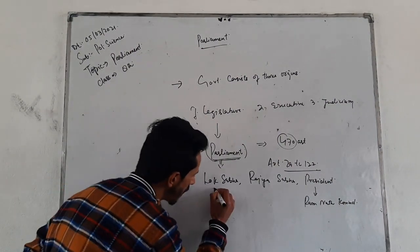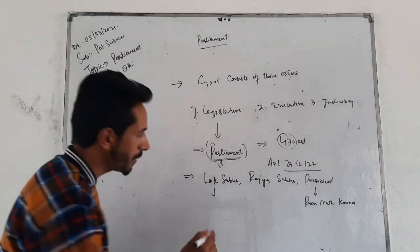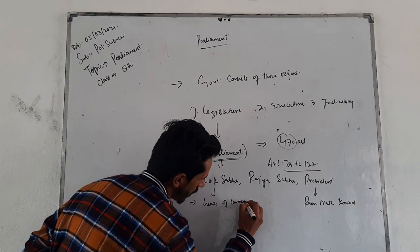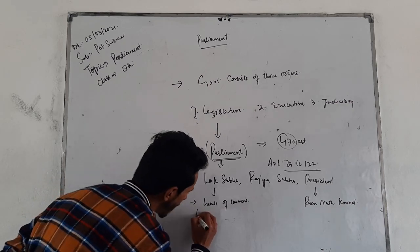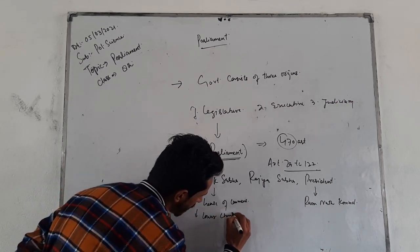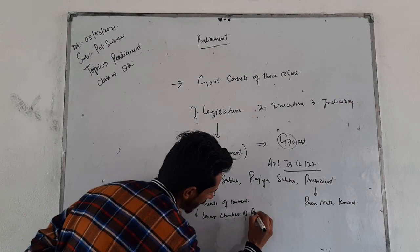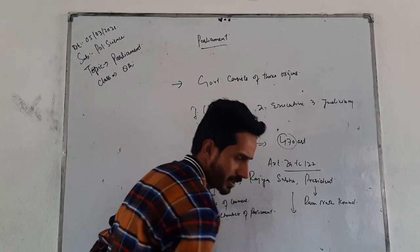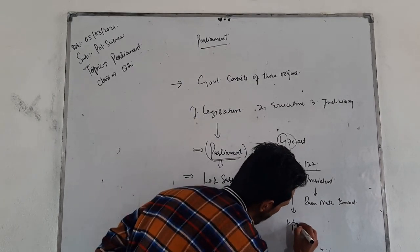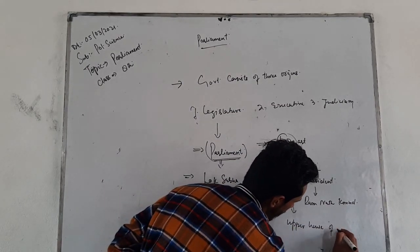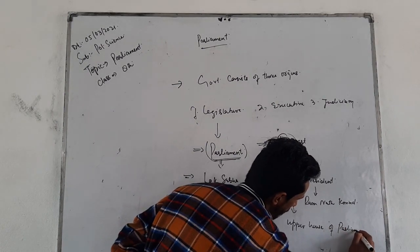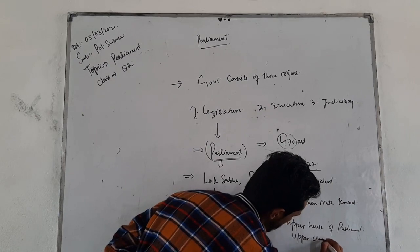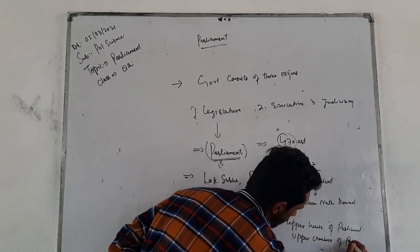Lok Sabha is also known as the House of Commons, and it is also known as the Lower Chamber of Parliament. When we talk about Rajya Sabha, it is known as the Upper House of Parliament, or the Upper Chamber of Parliament.